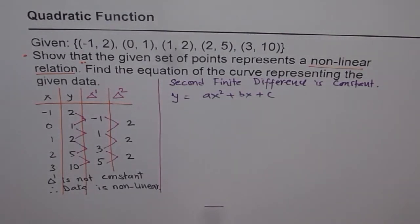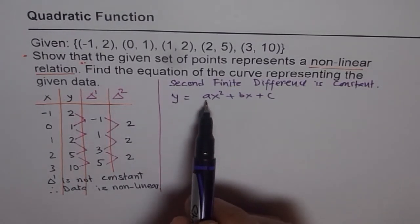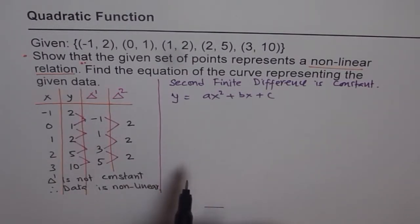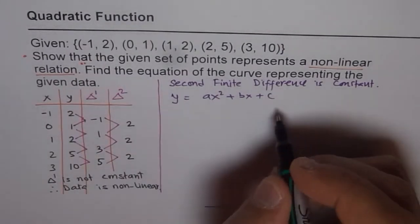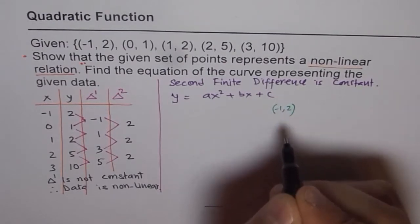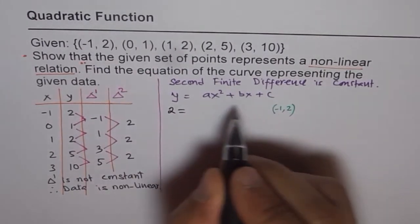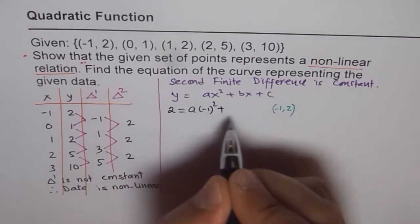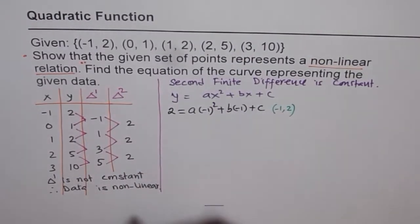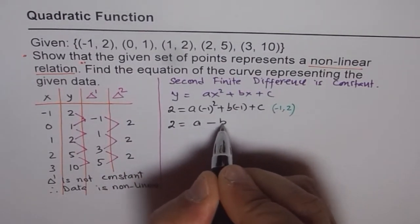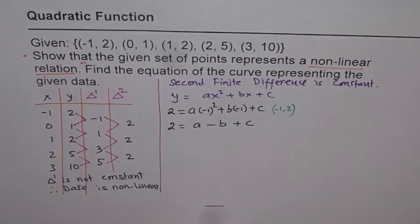Since the second finite difference is constant, the data can be represented by y = ax² + bx + c, a quadratic equation. To find the equation, we need to find the values of a, b, and c — three unknowns requiring three different equations. Selecting the point (-1, 2): y is 2, so we get 2 = a(-1)² + b(-1) + c, which simplifies to 2 = a - b + c. Let this be equation 2.